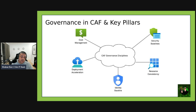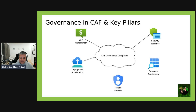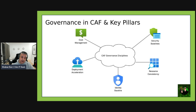With cost management, the goal is to prevent overspending and optimize resource usage. The tools include Azure Cost Management, billing, budgets, alerts, and tagging — which we've already talked about. An example is setting up budgets for each subscription and receiving alerts when you're nearing that limit.